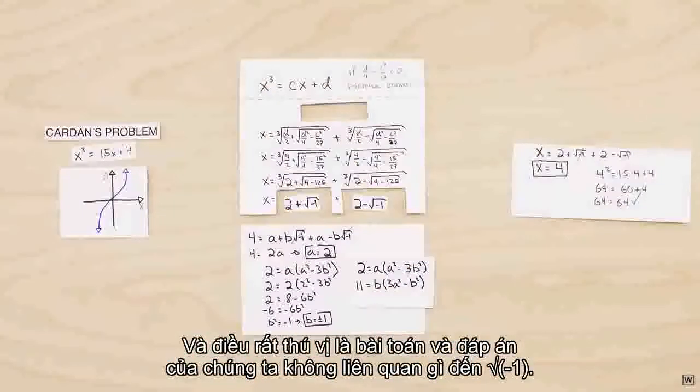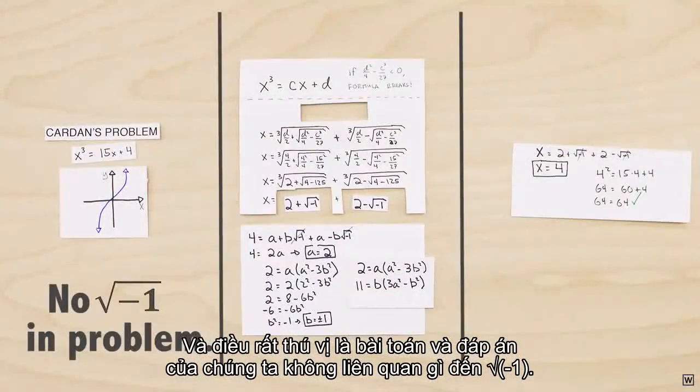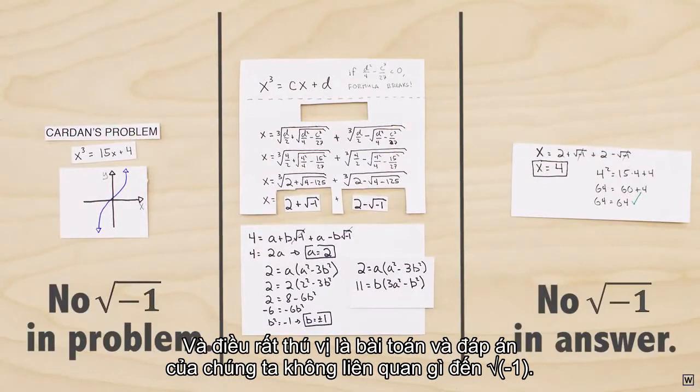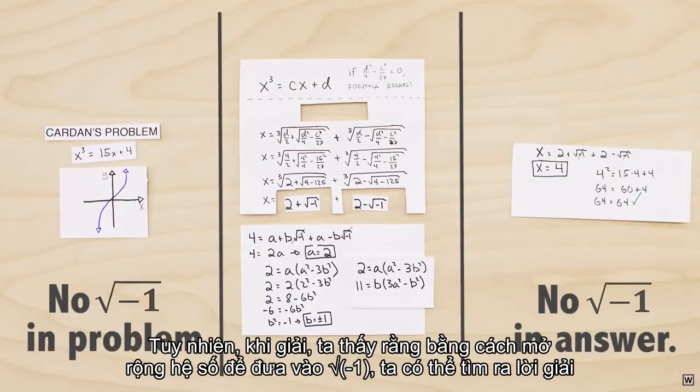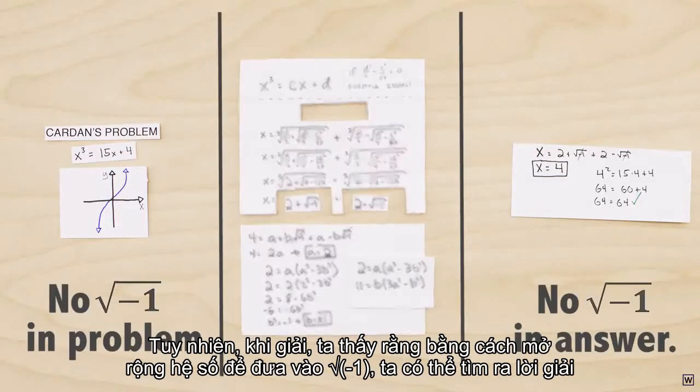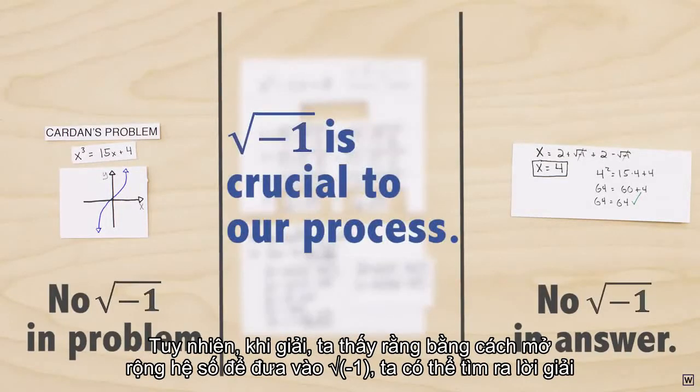And what's really interesting is that our problem had nothing to do with the square root of minus one, and neither did our answer. However, along the way, we found that by extending our number system to include the square root of minus one, we were able to find a solution.